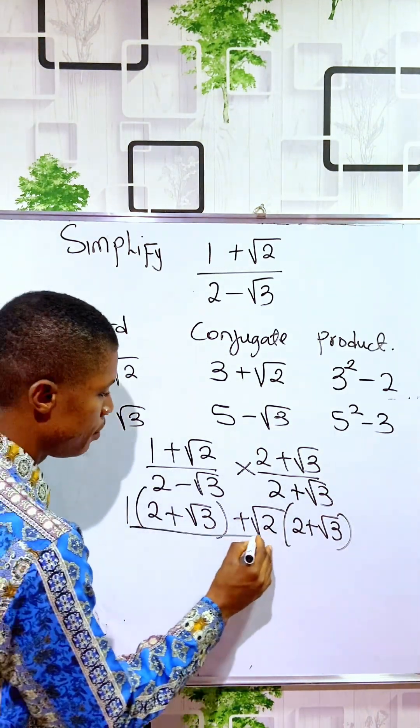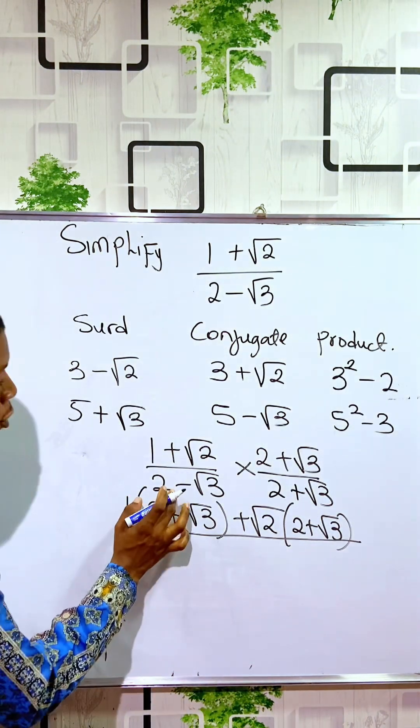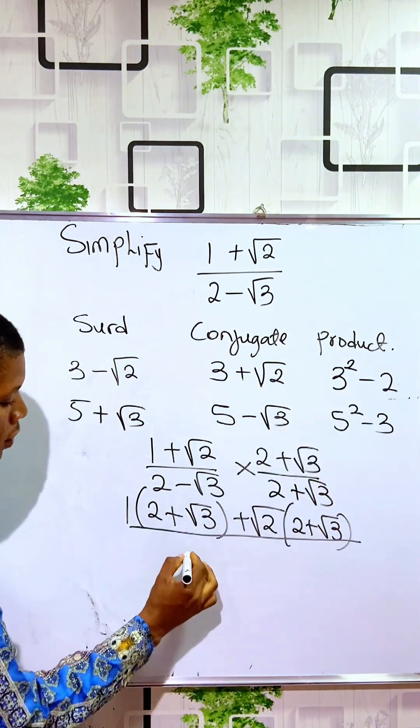Then divided by, when we divide it, we are dividing it by, making use of the product: 2 squared minus 3.